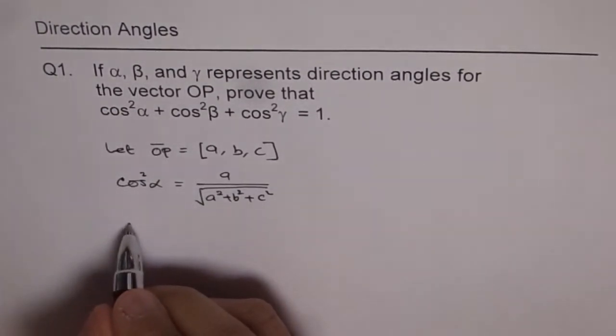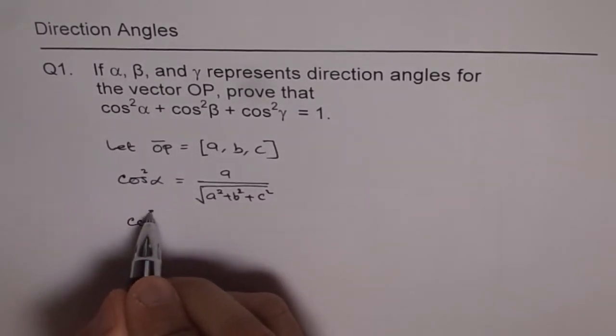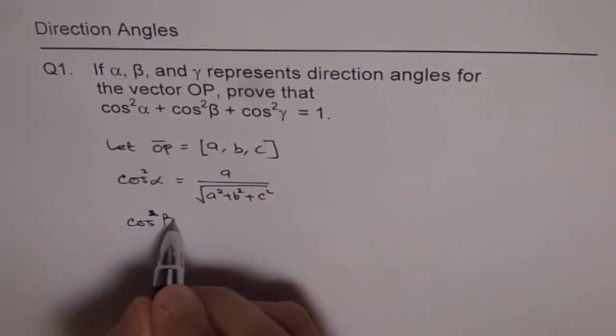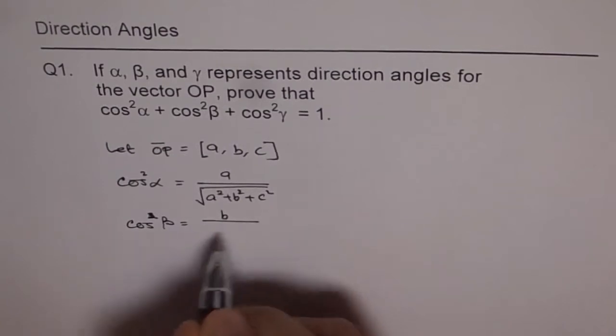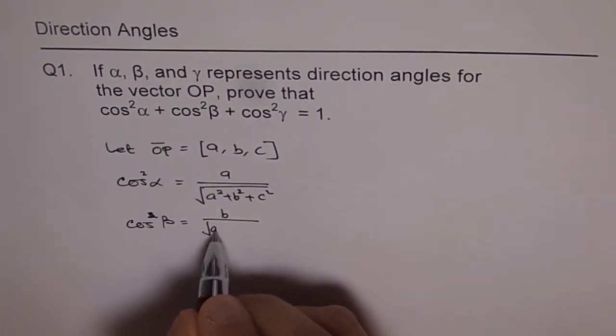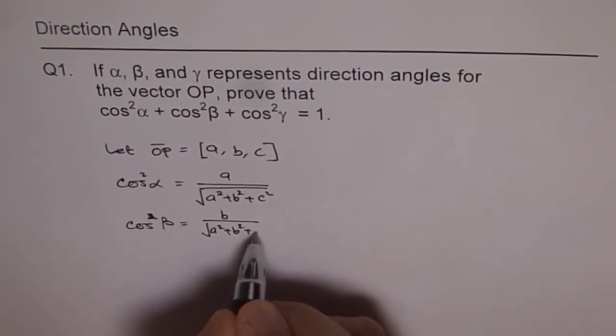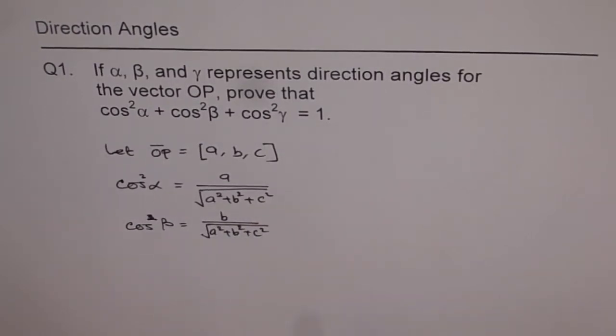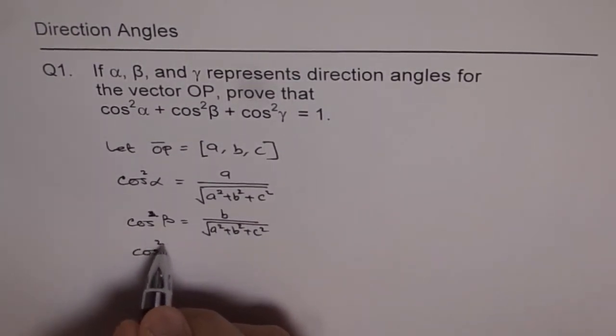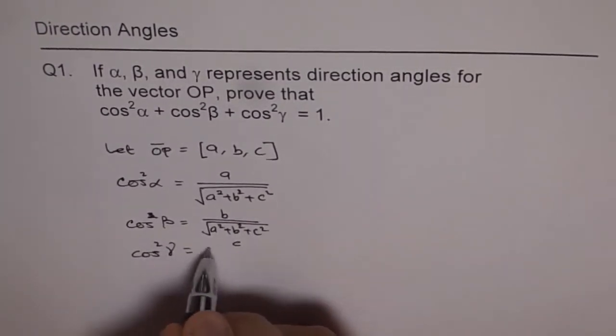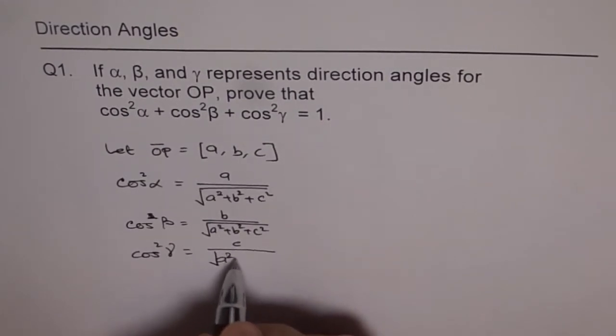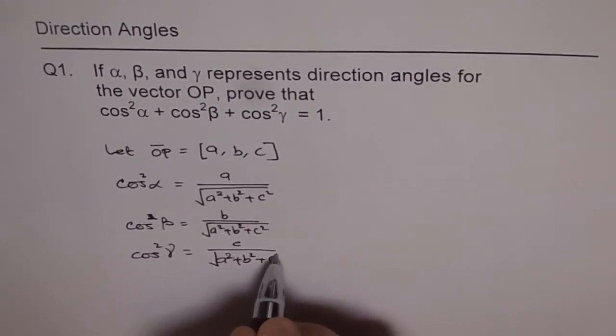And similarly, what is cos square beta? Cos square beta is B over magnitude of OP, which is A square plus B square plus C square. And cos square gamma is C over square root of A square plus B square plus C square.